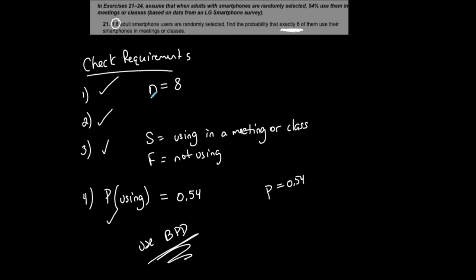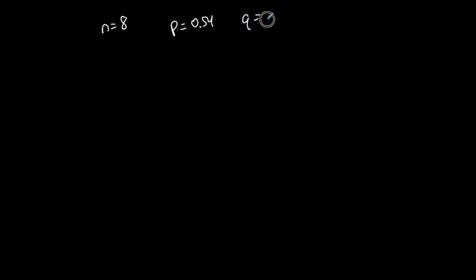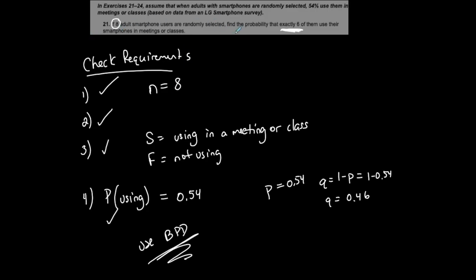All four requirements are met, so we can use the binomial probability distribution — BPD. We define n equals 8, p equals 0.54, and q equals 1 minus 0.54, so q equals 0.46. Always define all your variables when setting this up.